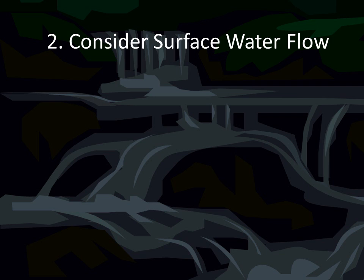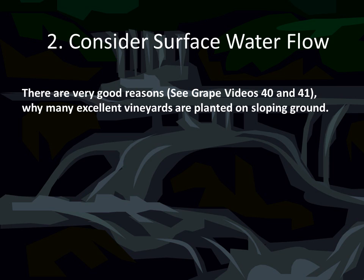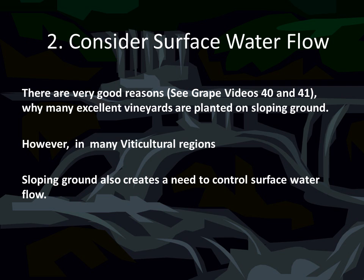The second factor in vineyard design is the consideration of surface water flow. Most vineyards are planted on sloping surfaces with good topography, and that can be a real problem in climates like Michigan where we have heavy rains. I refer you back to Grape Videos 40 and 41 on why many excellent vineyards are planted on sloping ground. However, in many viticultural regions, sloping ground creates a need to control surface water flow.